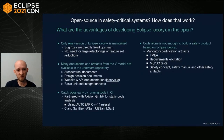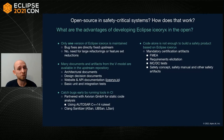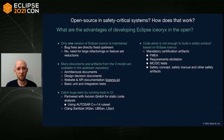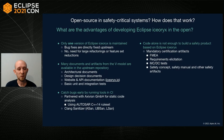The most important advantage of developing Eclipse iceoryx in the open is that we don't have two versions — no internal fork to maintain, just one version in the upstream repository, so bugs are directly fixed upstream. There's no need for large refactorings or feature-set reductions. Many documents and artifacts from the V-model are available in the upstream repository — architectural documents, design decision documents — plus a website for documentation and API, and basic unit and integration tests are also available publicly.